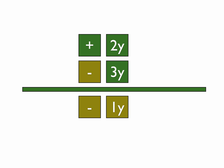Because you have 2 positives and 3 negatives. When you subtract a negative and a positive, the bigger number, if the negative is bigger, then it's a negative number. So it's negative 1y.